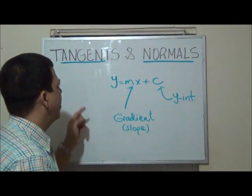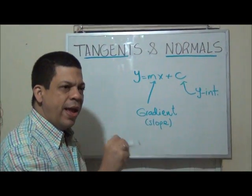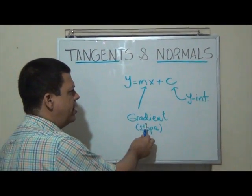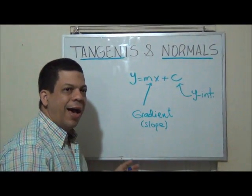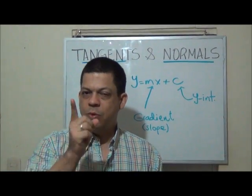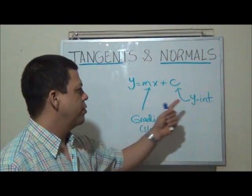So if we want to find the tangent or the normal to any curve, we need to find the gradient and the y-intercept. And this is what we study in mathematics as well. So let's do an example to see how to find these two values.